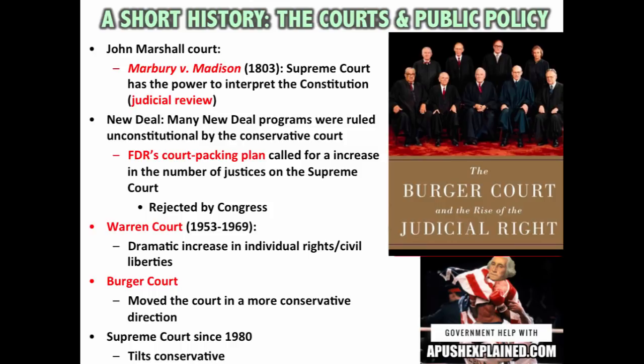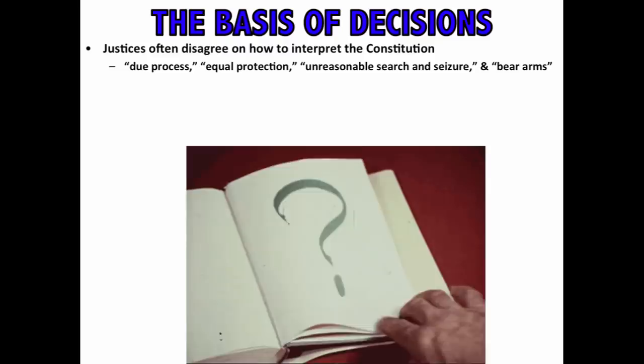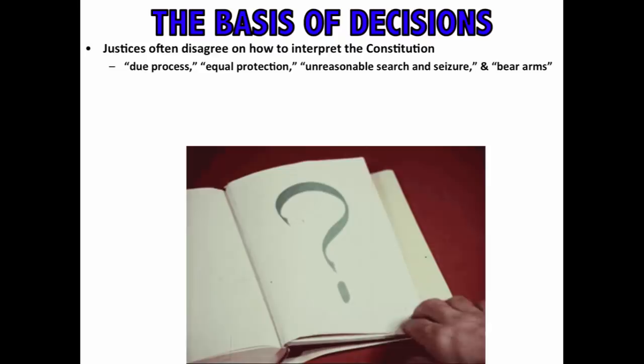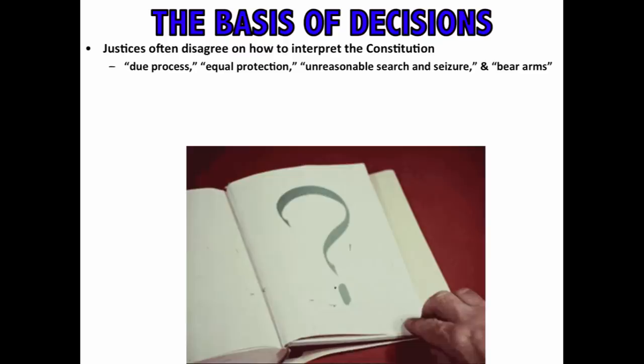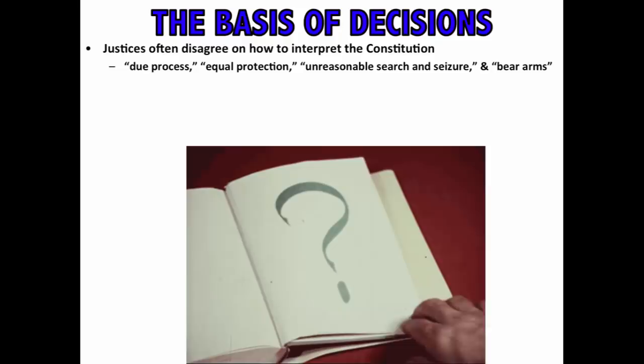The basis of decisions gets complicated because justices often disagree on how to interpret the Constitution. Words like 'due process,' 'equal protection,' and 'bear arms' are ambiguous. What is an unreasonable search? What does due process look like in action? One's interpretation of the Constitution is very often done by applying our own values to a particular situation — that's why we have the idea of more liberal or conservative judges, because individuals approach cases with their own value system in place.